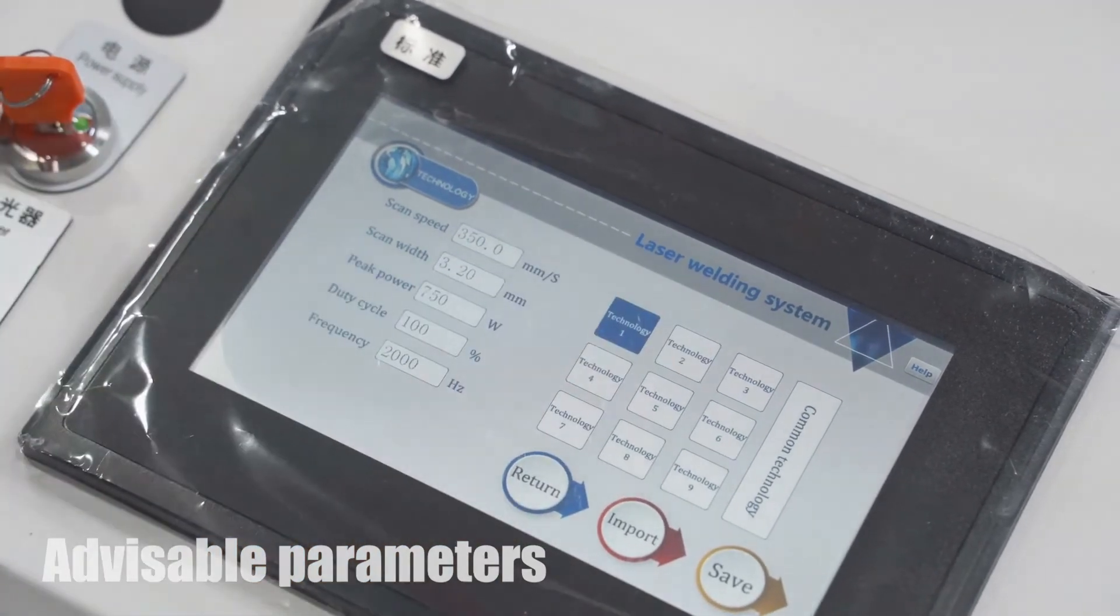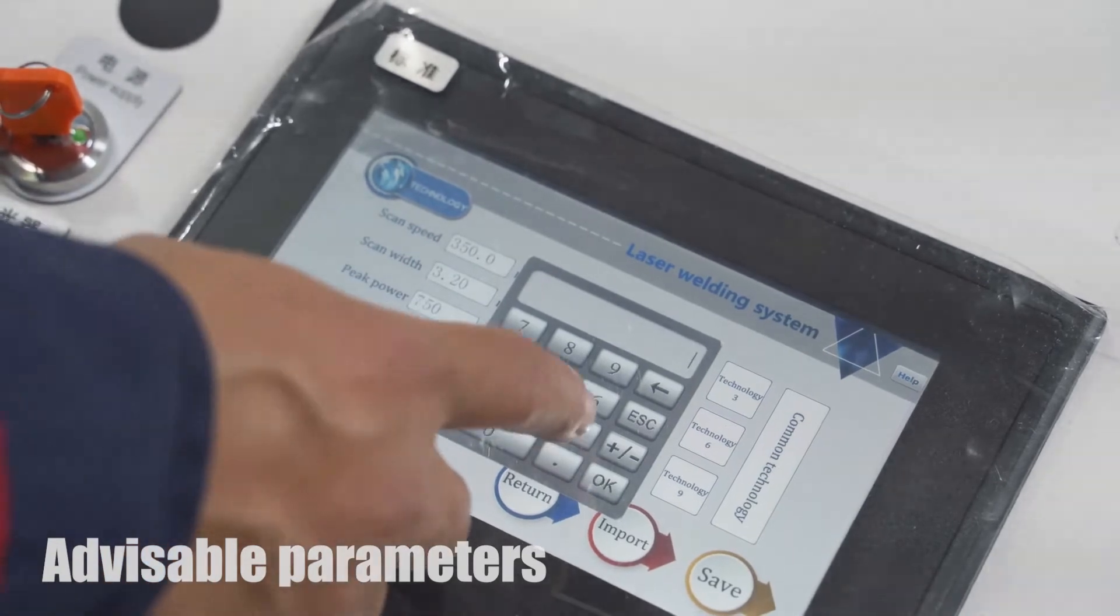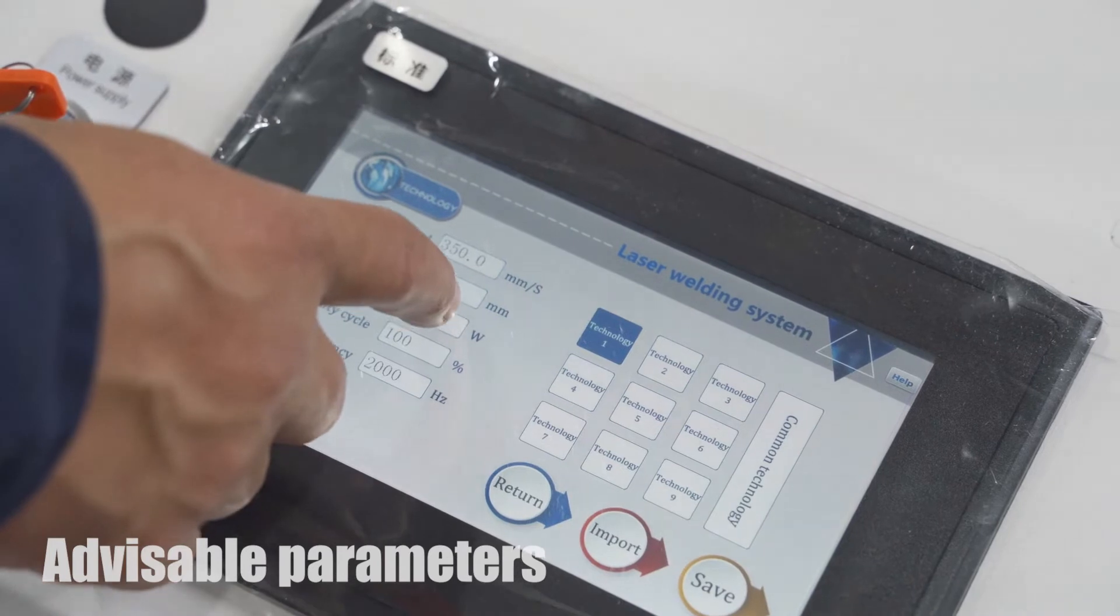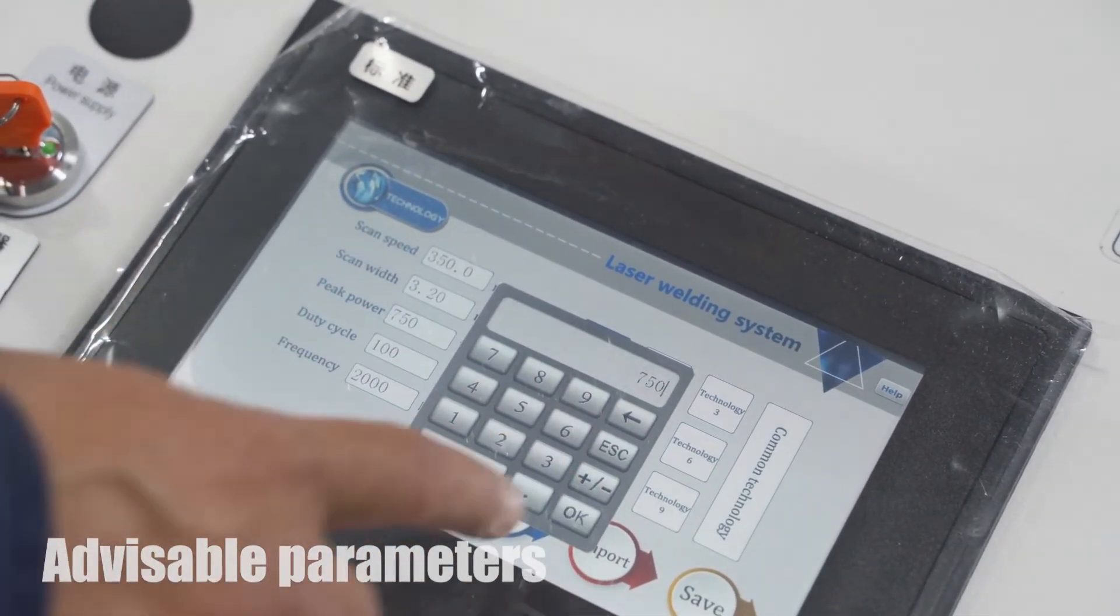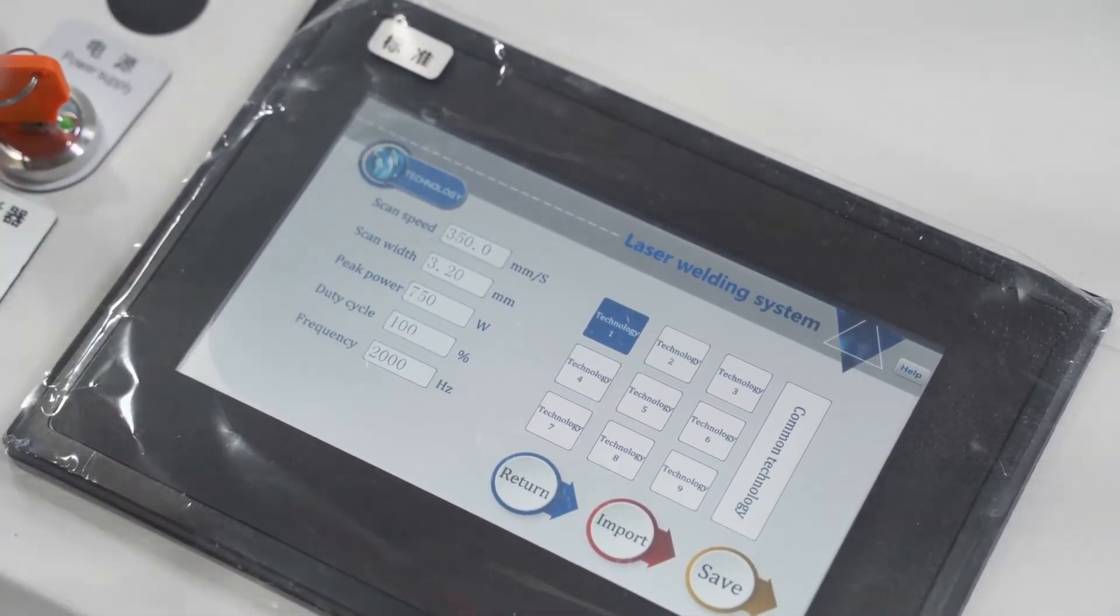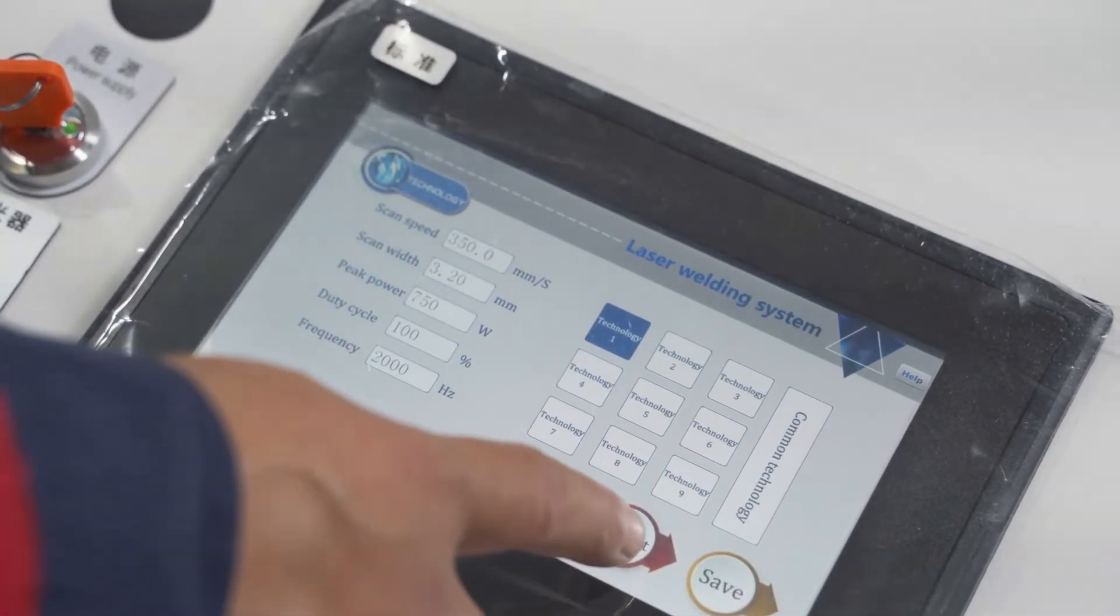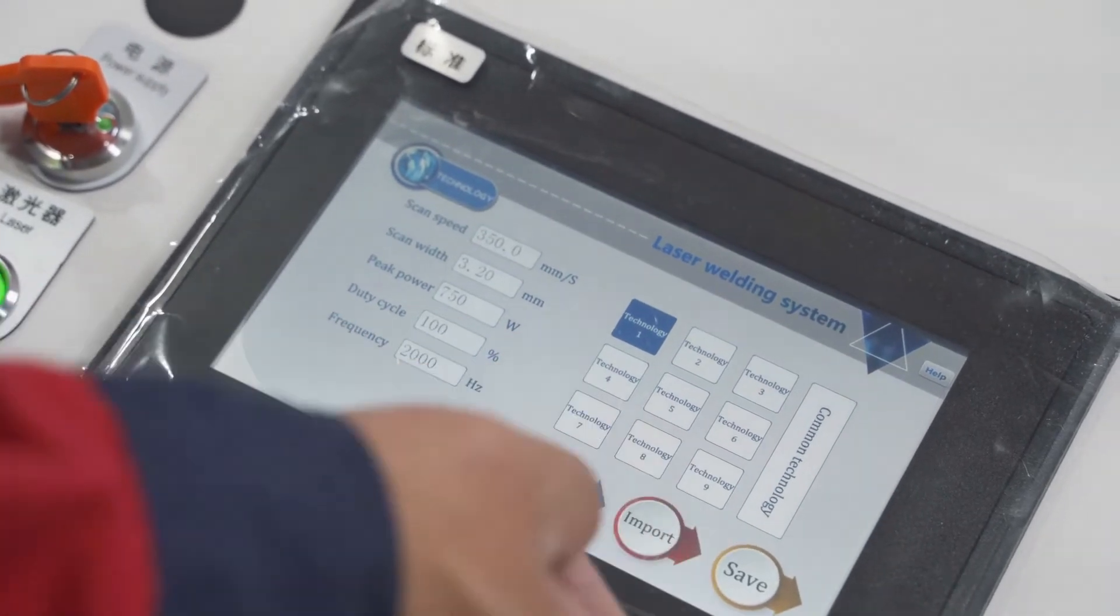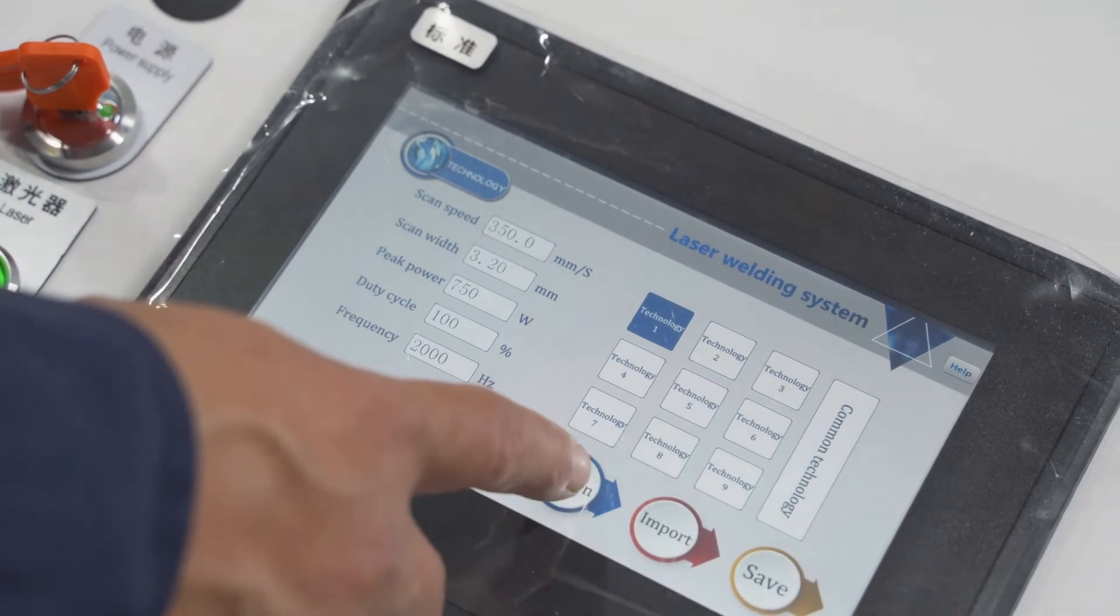Peak power 7, 2, 1, and this is the same. Save. You can press save to save the parameters, and these parameters are advisable parameters.